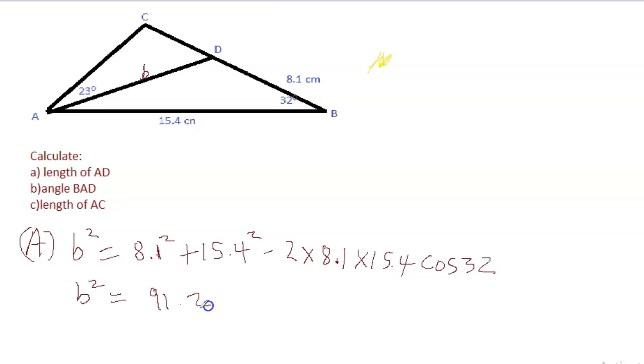And then b is the square root of 91.2, that is 9.5. Since they're using one decimal point, this is 9.5 centimeters. So the length of this side here is 9.5 centimeters.